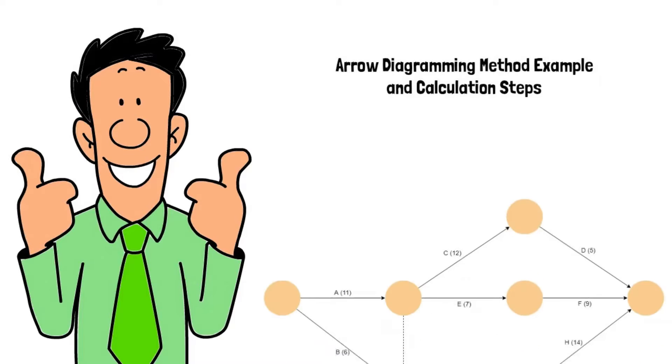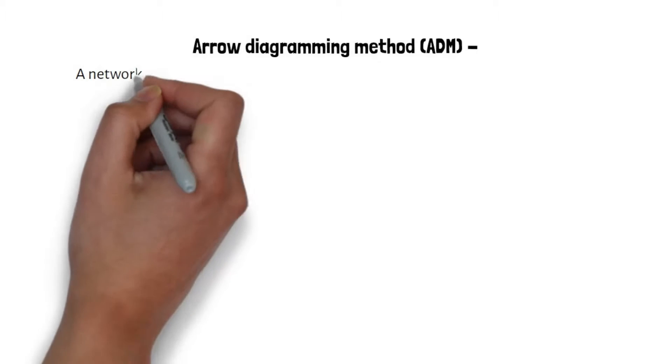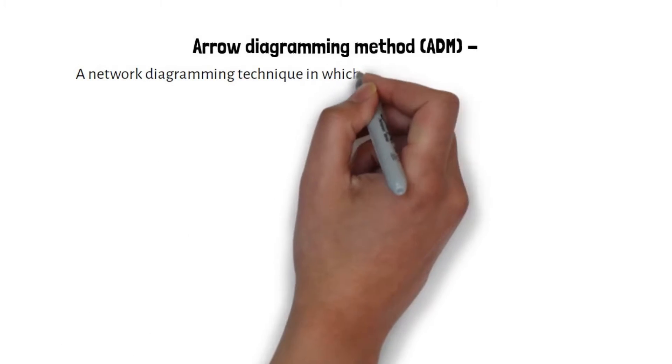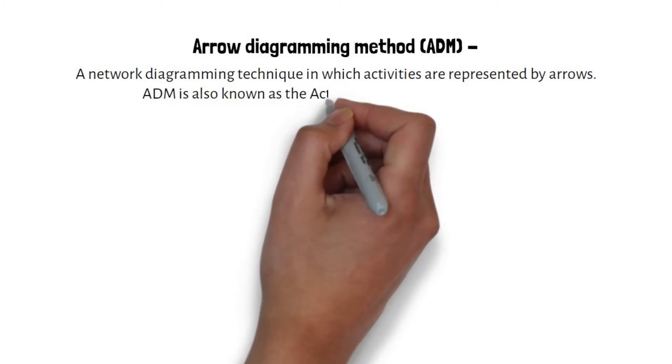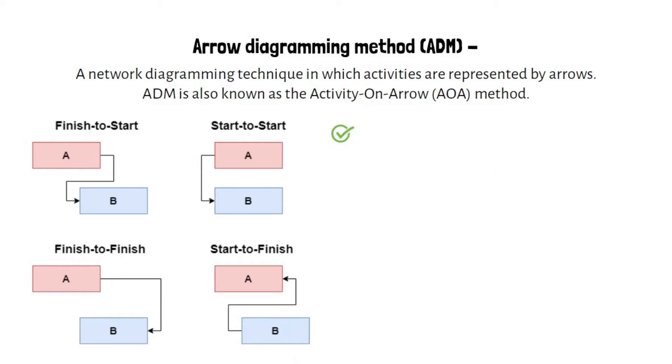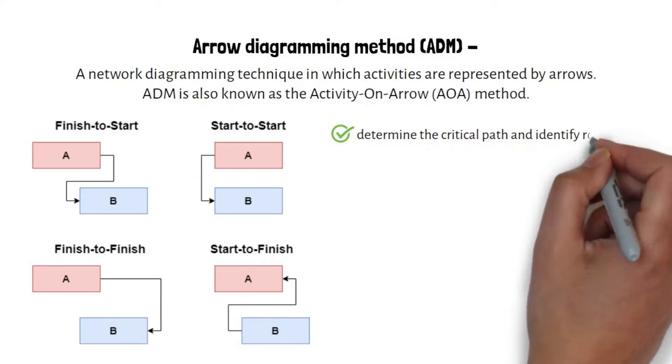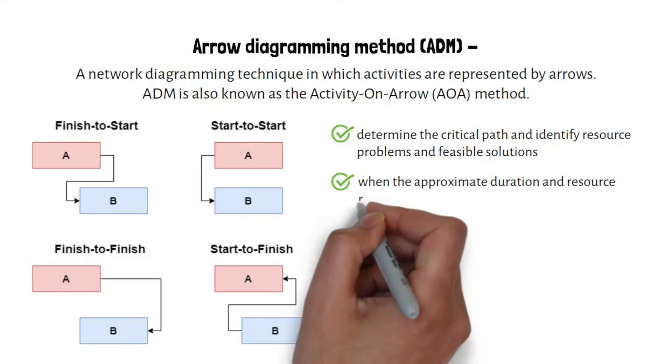Arrow diagramming method example and calculation steps. Arrow diagramming method is a network diagramming technique in which activities are represented by arrows. ADM is also known as the activity on arrow method. It has been used a long time to determine the critical path and identify resource problems and feasible solutions when the approximate duration and resource requirement of all the activities of the network diagram are known.